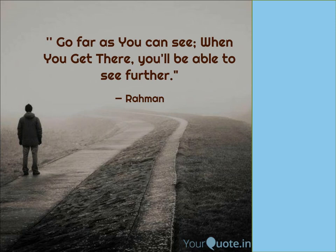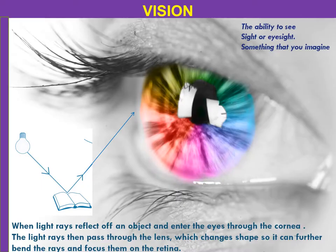So, going further and vision are both very important to reach your target. When you get further, you will be able to see more. Vision means the ability to see, or eyesight — something that you imagine is called vision. How are we visible to other objects? When light is passed on an object, the object reflects the rays and they enter the eye through the cornea.